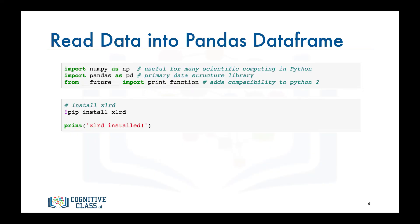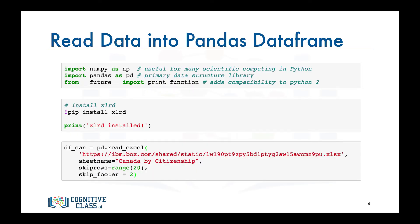Then we call the pandas function read_excel to read the data into a pandas data frame, and we name this data frame df_can. Notice how we're skipping the first 20 rows to read only the data corresponding to each country.